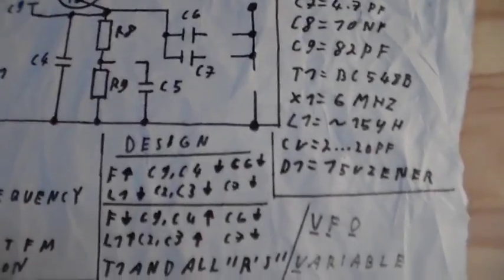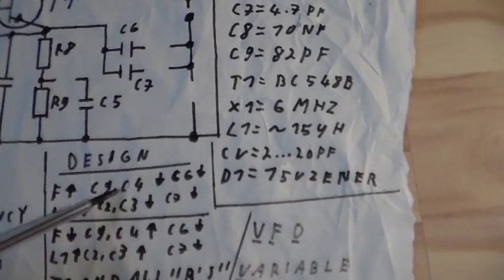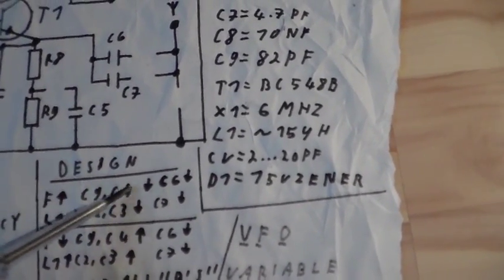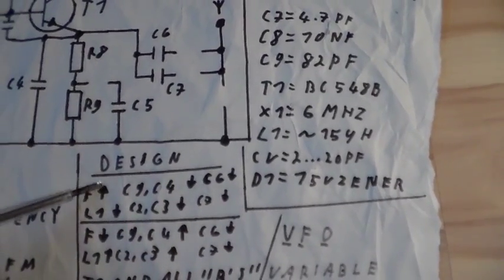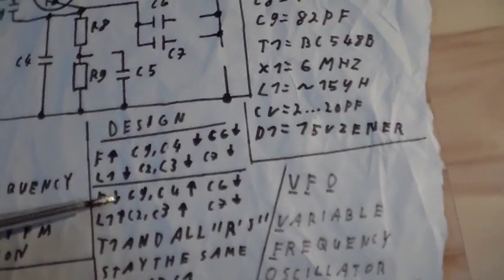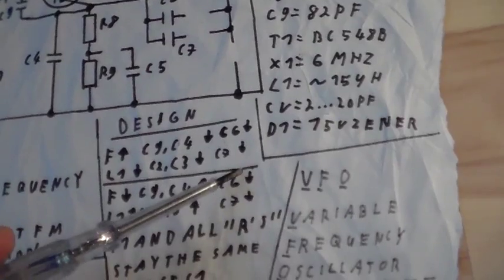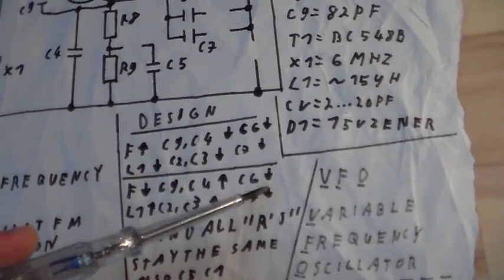If you design a transmitter, various capacitors need to get smaller and the coil needs to get smaller if the frequency gets higher. If the frequency gets lower, the capacitors must get bigger. Also this one here, these need also to get bigger.